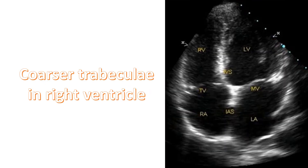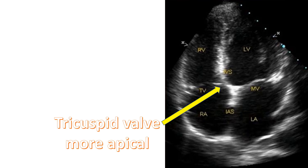Ventricular situs depends on the morphology of the ventricles. As the atrioventricular valves go with the ventricles, the morphological right ventricle has the tricuspid valve and the morphological left ventricle has the mitral valve. In abnormal situations, they are referred to as the right AV valve and left AV valve. Usually, the distally placed valve is taken as the tricuspid valve.